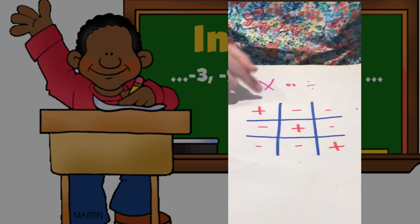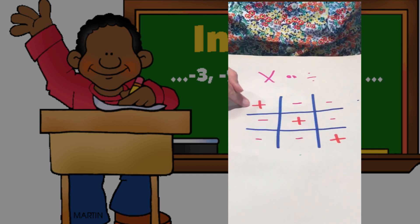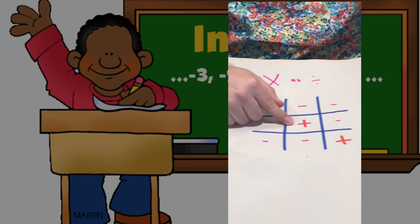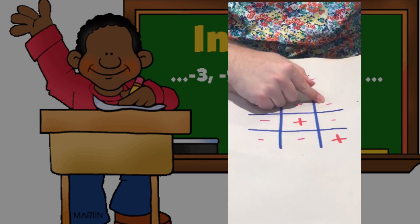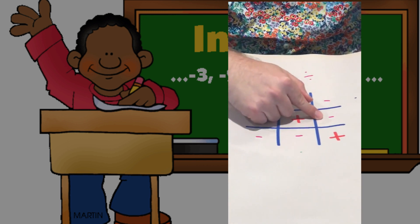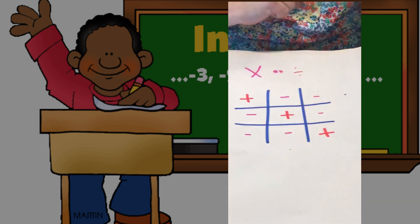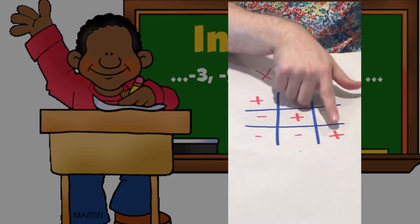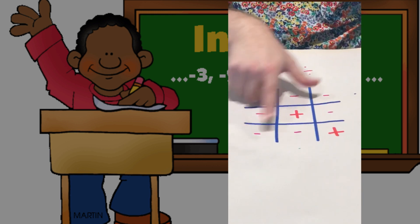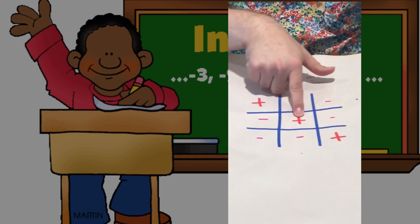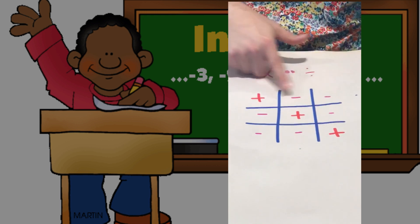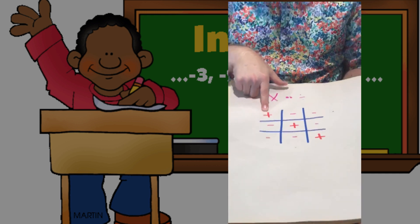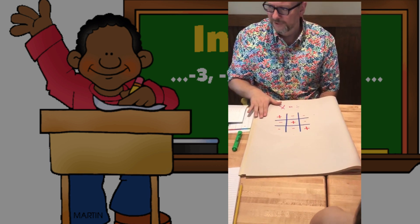You don't have to read it across — I can read it down. A positive times a negative is a negative. A negative times a positive is a negative. A negative divided by a negative is a positive. It gets better — you can read it backwards. A positive times a negative is a negative. A negative times a positive is a negative. A negative times a negative is a positive. Isn't that neat? Works the same way for division.